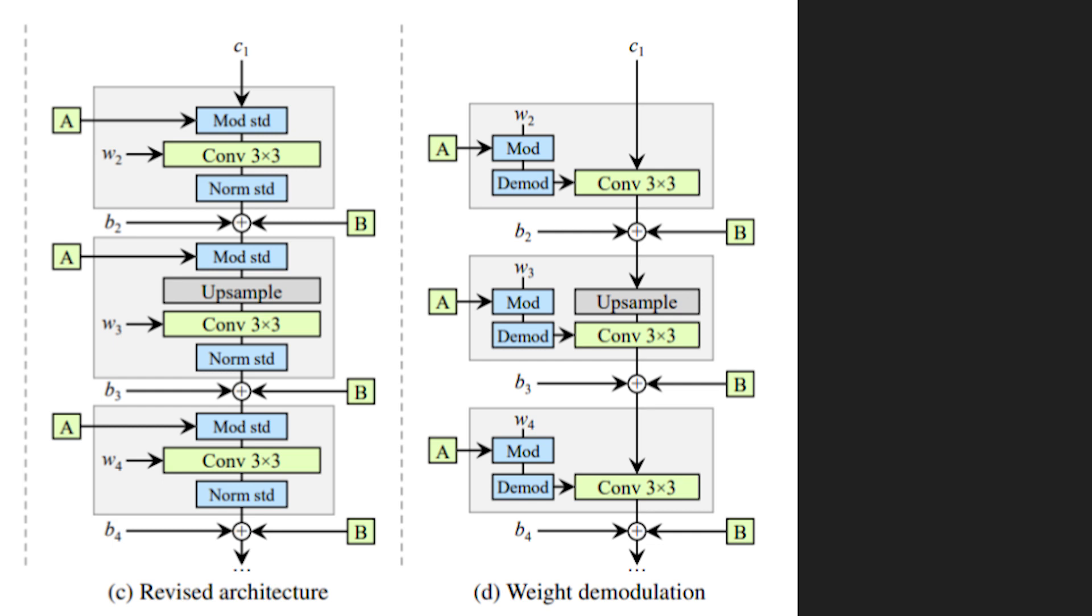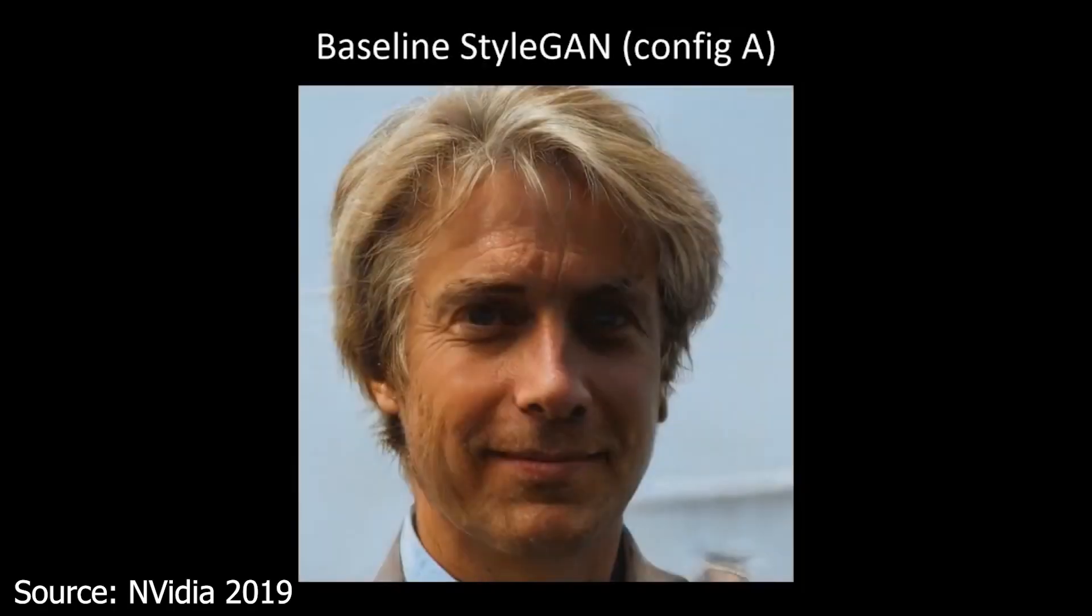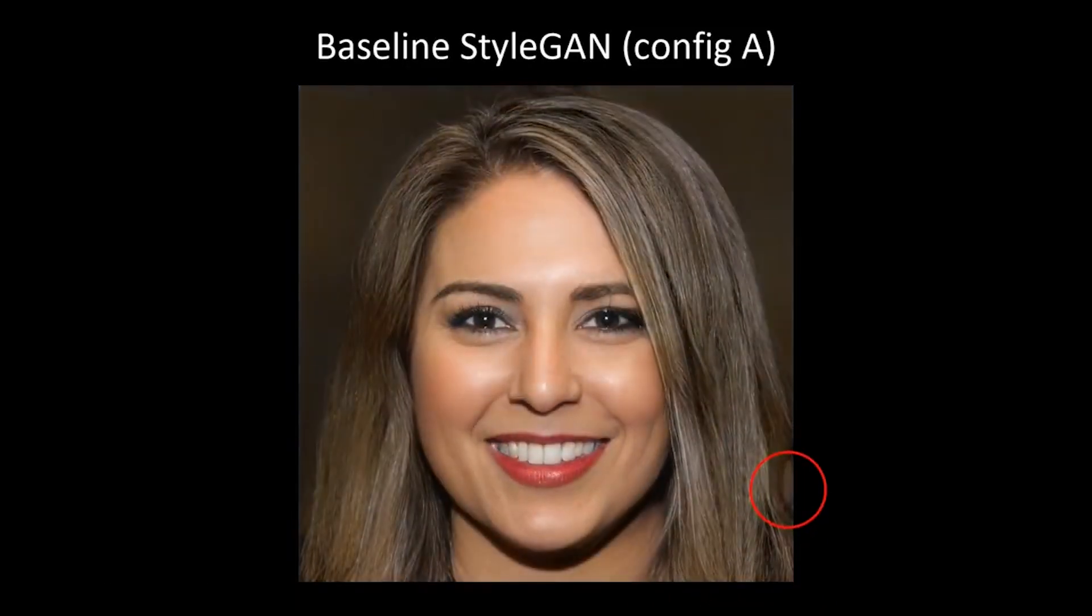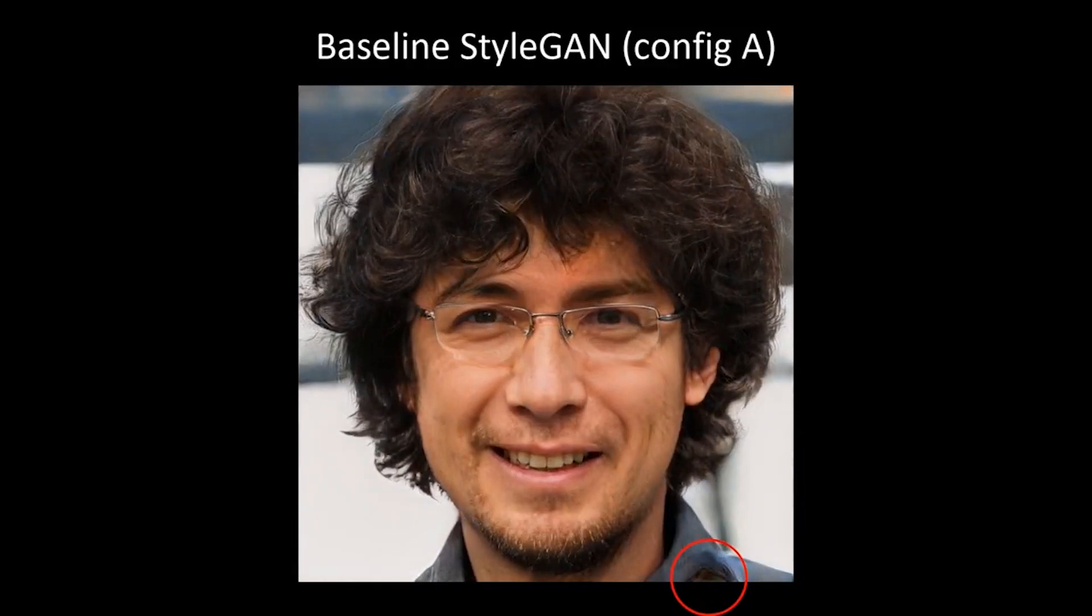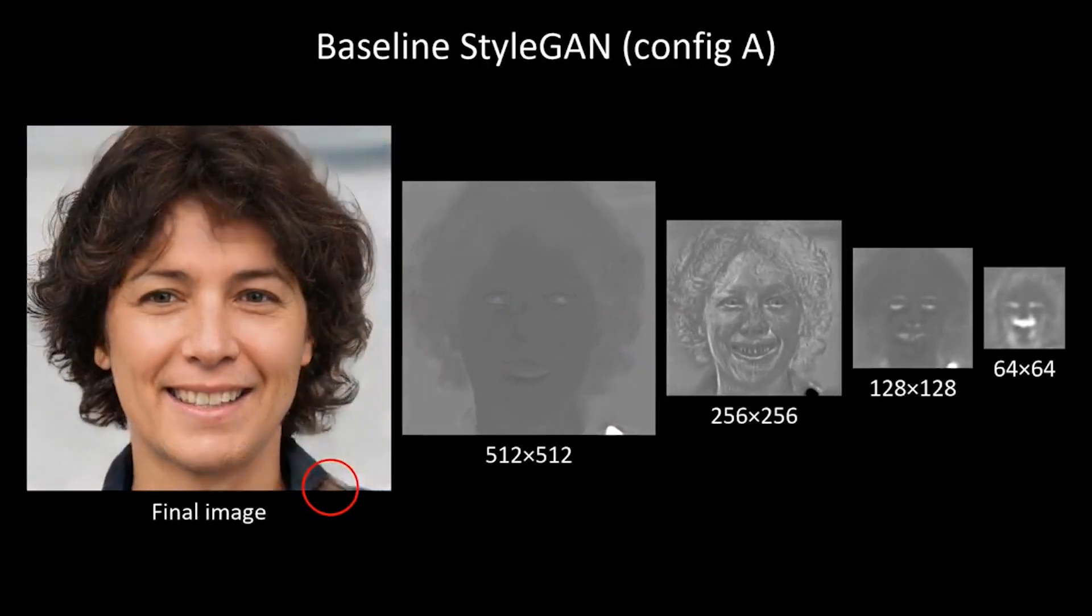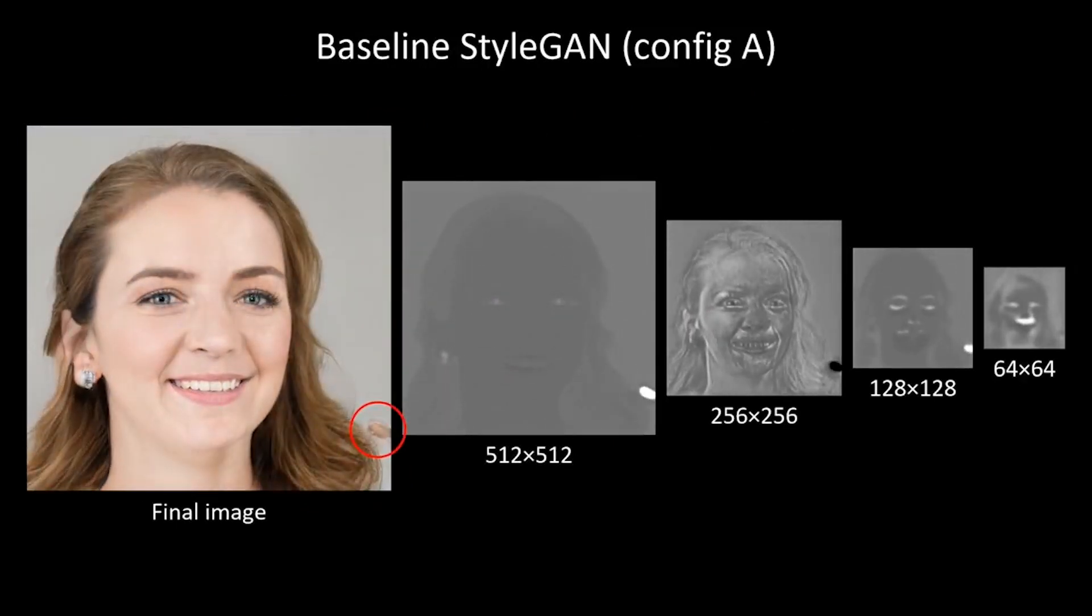The original StyleGAN had these little droplet artifacts that you can see here. In each image and as part of the feature maps AdaIN would create little pieces where the feature maps had very extreme values caused by the way it normalized the feature maps. With modulated convolution these droplet artifacts go away. This is a video from the authors showing this improvement.